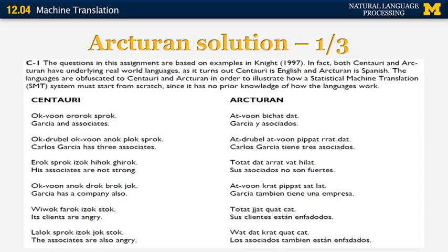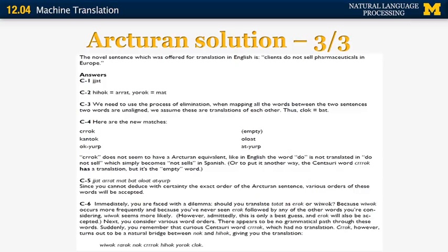Here is the solution. It turns out that even though those languages were labeled as Centauri and Arcturian, they were in fact English and Spanish. This is the example used by Kevin Knight in 1997 to introduce how machine translation works. Every word in English and Spanish was translated into a made-up word in those artificial languages. For example, the name Garcia appears in both languages, and since person names are typically left untranslated, we can figure out that the corresponding word in both languages is the same. You can do this recursively until you figure out the rest of the words. Now you have an idea of how statistical machine translation works.